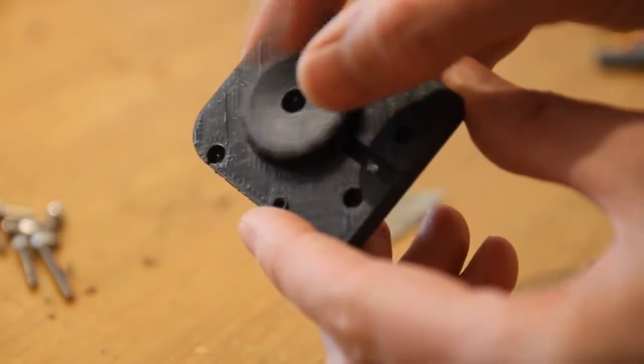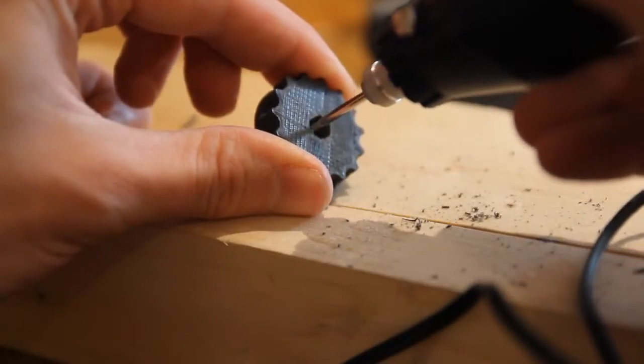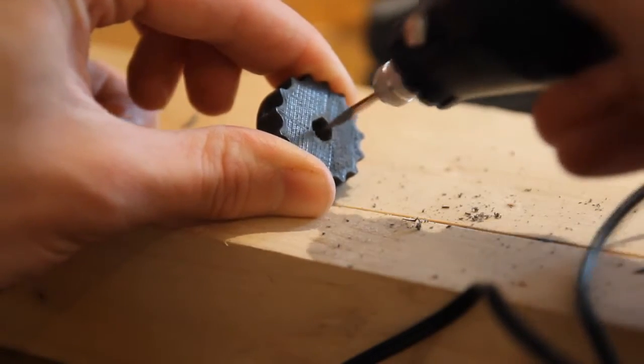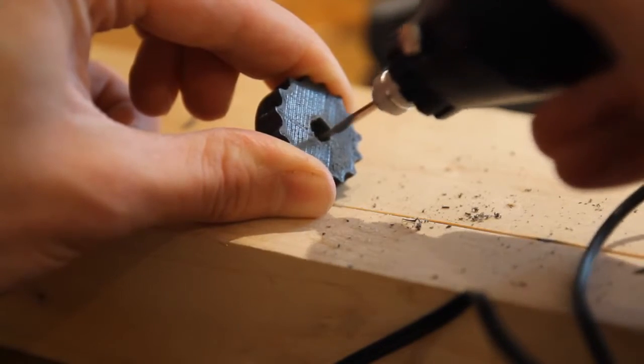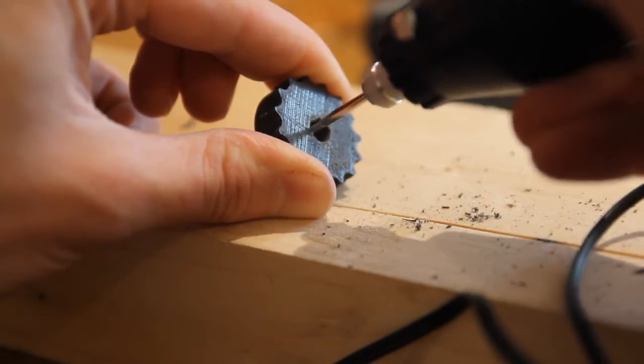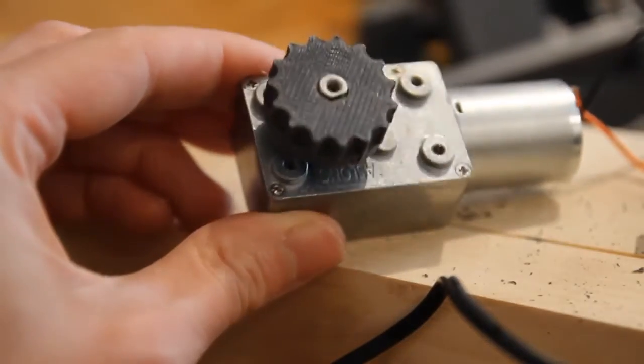It should spin quite freely. You may need to use a multi-tool just to open up the hole at the centre of the gear so that it fits nicely on the gear spindle. Here it is in place.